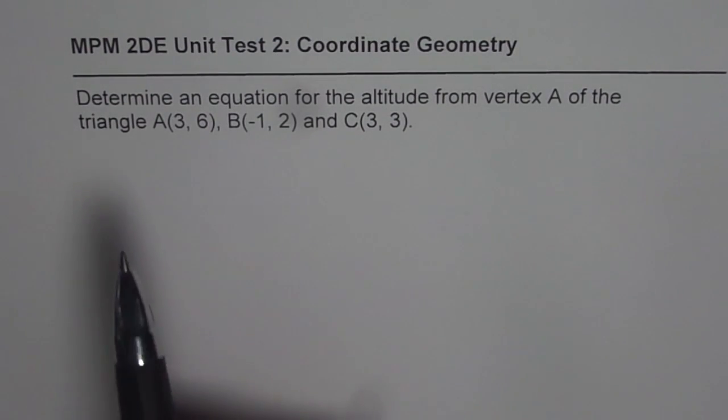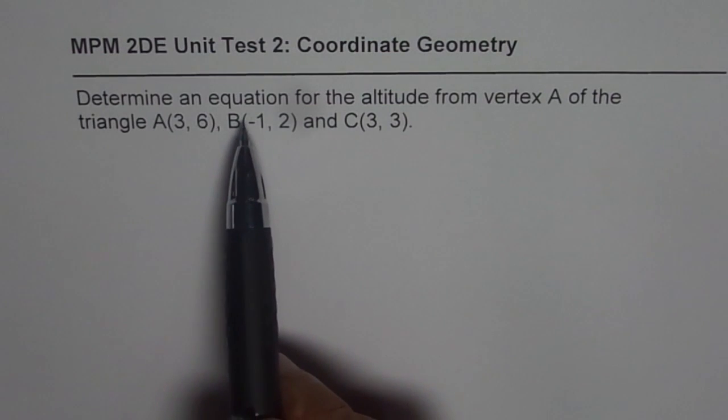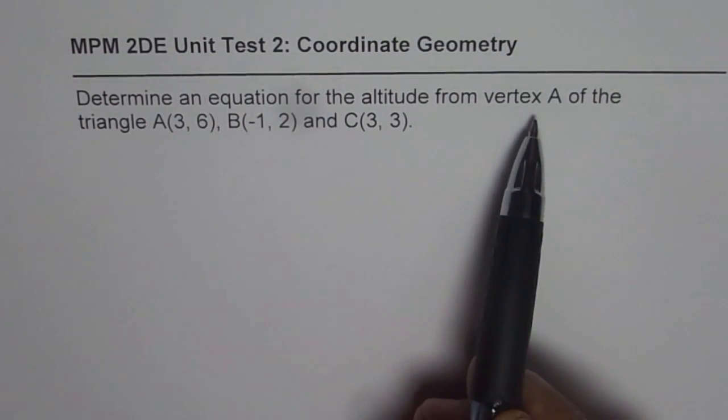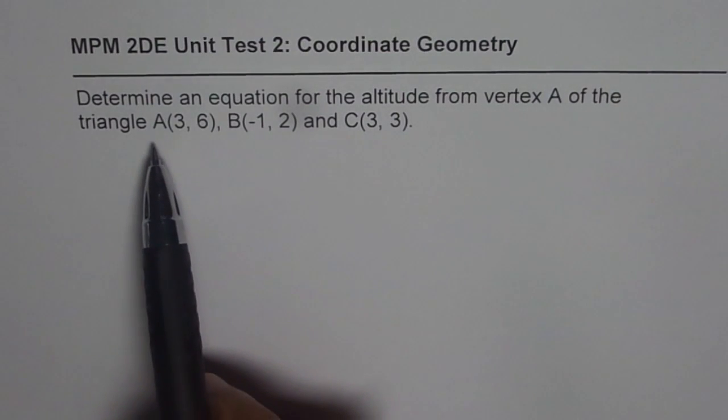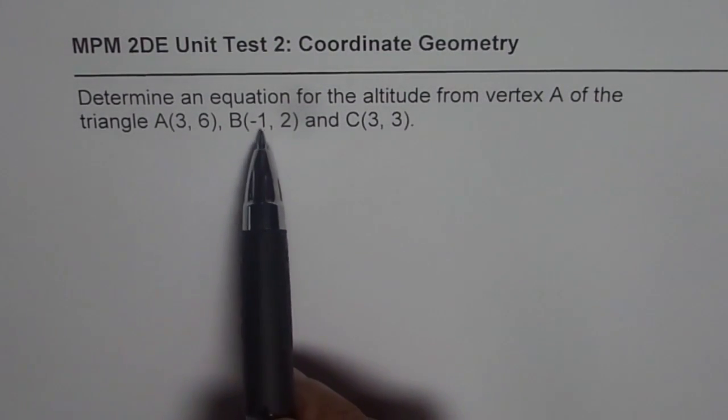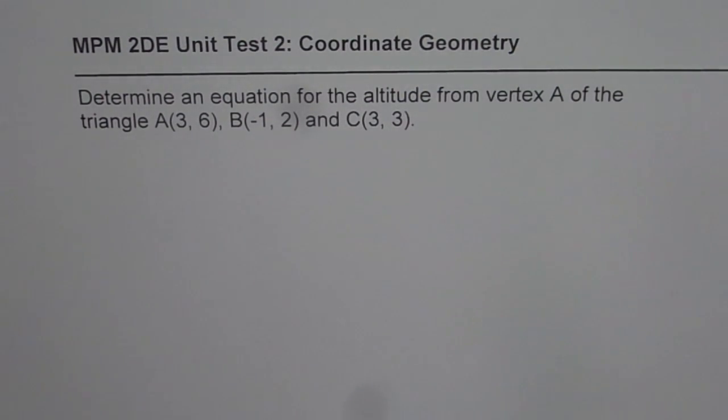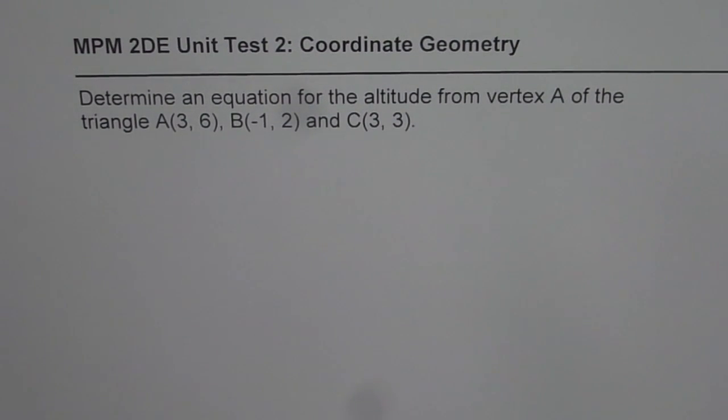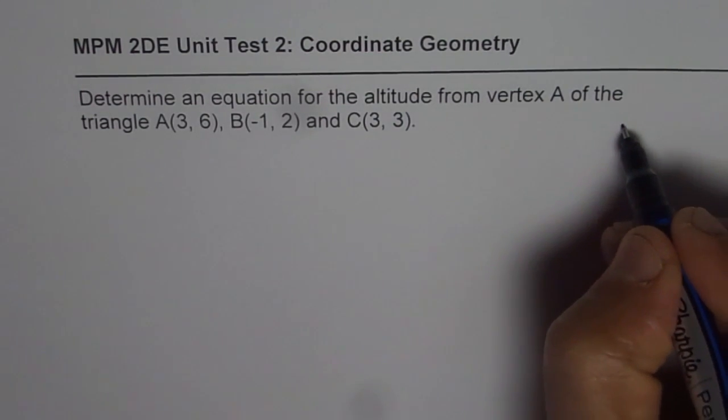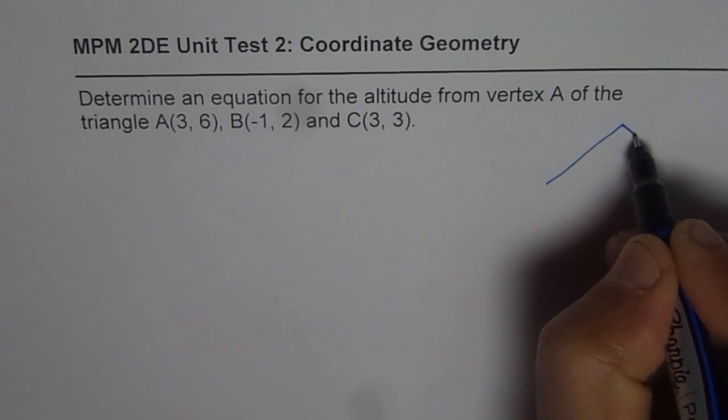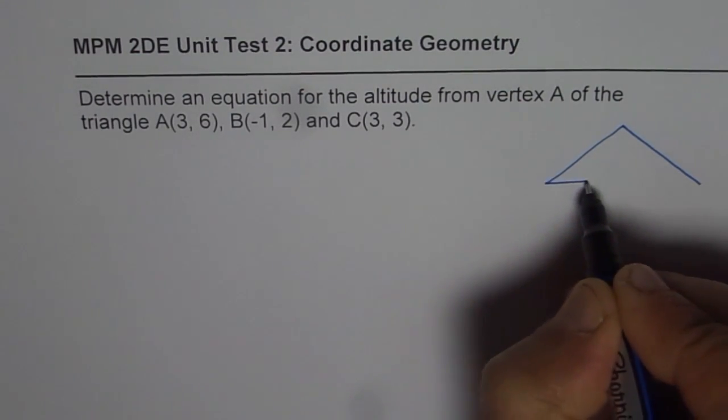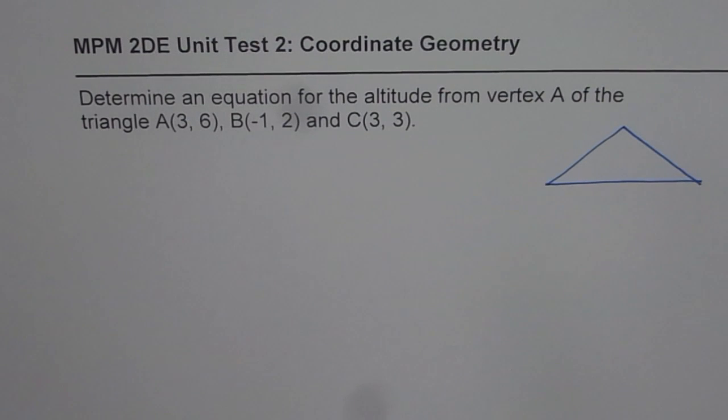The question here is: determine an equation for the altitude from vertex A of the triangle A(3, 6), B(-1, 2), and C(3, 3). It's a good idea to first sketch. Now whenever we're trying to sketch a triangle like this, we need not really make a coordinate system. We can just make one approximate sketch convenient to solve the problem.